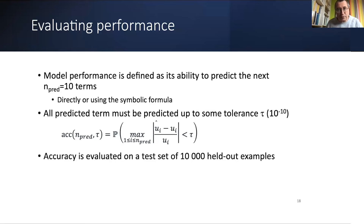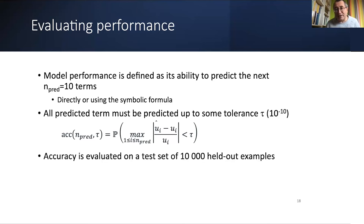To evaluate the model, you can't just evaluate the quality of a predicted function because many functions could be correct. Instead, you evaluate by prediction: ask the model to predict the next 10 terms, and require all terms to be correct — not an average. For integer sequences, you use an infinite distance metric at test time. We evaluate on 10,000 held-out samples — samples not seen at training.